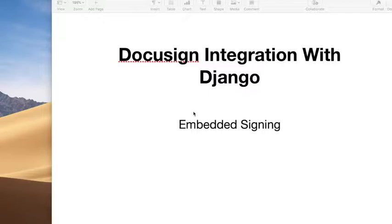Today I will show you how you can integrate DocuSign within your Python Django application, and we will talk about embedded signing. The way embedded signing works is DocuSign provides us with a facility where we can integrate the e-signing functionality within our application without asking our users to go to other sites. Although it requires users to be redirected to the DocuSign website, that's only for the signing purpose — for most sections of the embedded signing functionality, your users stay within the application.